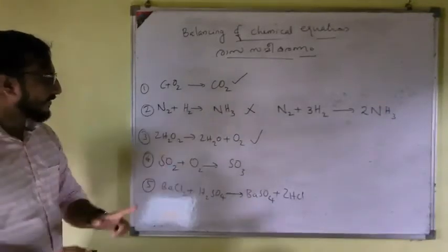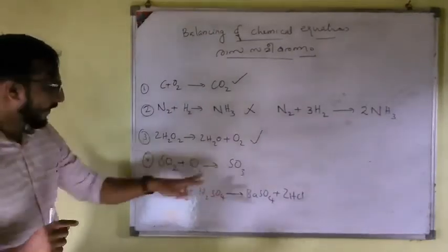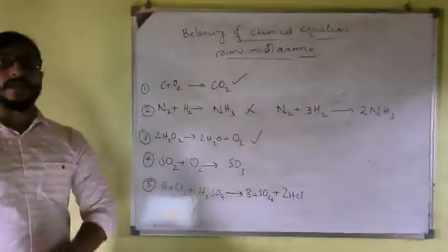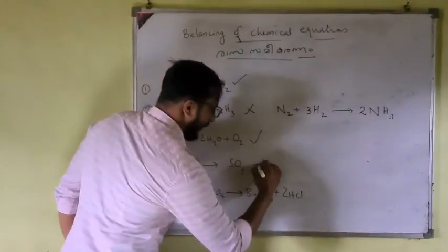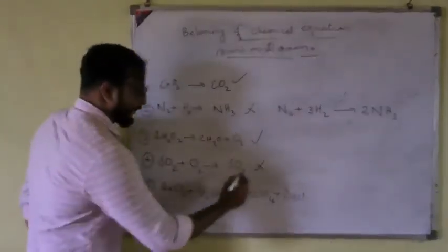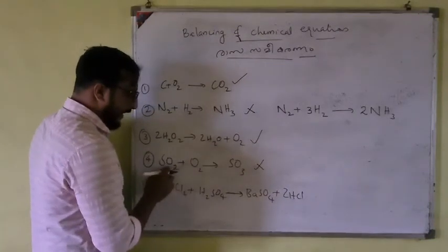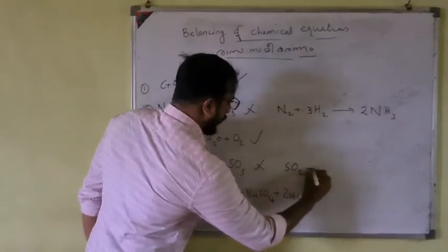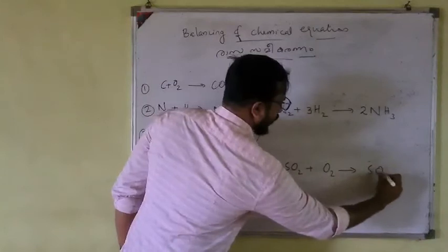SO2 + O2 gives SO3. Is this balanced? S is 1 on both sides. Oxygen on the reactant side: 2 in SO2 plus 2 in O2 gives 4. On the product side: 3 in SO3. Four is not equal to 3, so this is not balanced.